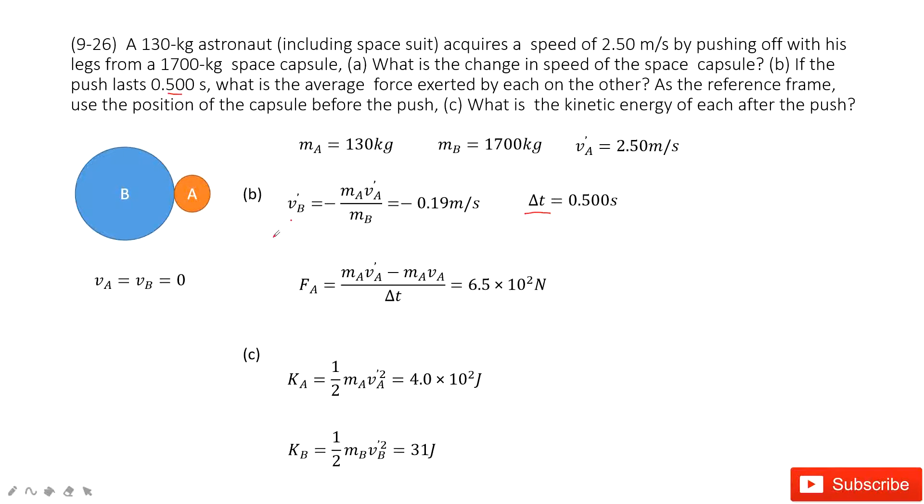Average force for object A is the change of momentum for object A. Final momentum for A minus initial momentum for A divided by delta t is the average force. This is the impulse equals to the change of momentum, and then we can input the known quantities to get the average force for A.